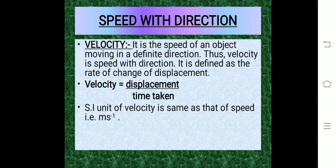Speed with direction. The rate of motion of an object can be more comprehensive if we specify its direction of motion along with its speed. The quantity that specifies both these aspects is called velocity. Velocity is the speed of an object moving in a definite direction — that is, velocity is speed with direction.